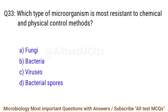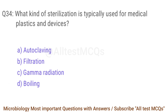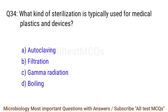Q33. Which type of microorganism is most resistant to chemical and physical control methods? The correct answer is option D: Bacterial spores. Q34. What kind of sterilization is typically used for medical plastics and devices? The correct answer is option C: Gamma radiation.